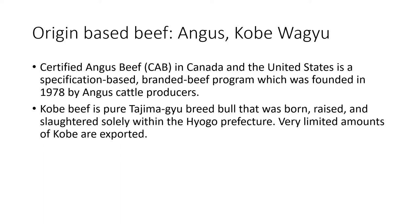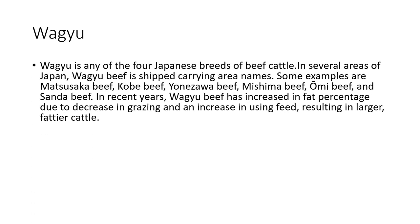Kobe beef is typically from Japan with a regional indication of which part of Japan. Wagyu is one of the four main Japanese breeds of beef cattle. Examples of Wagyu beef include Matsusaka beef, Kobe beef, and Yonezawa beef. Essentially, any of the four Japanese breeds of beef cattle can be called Wagyu, of which Kobe is one.